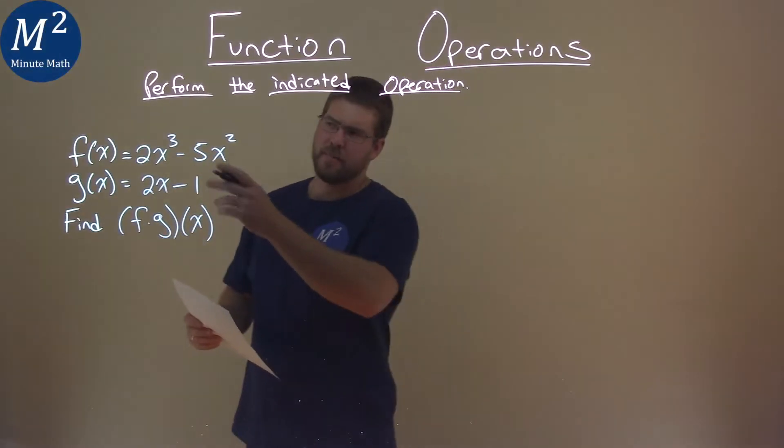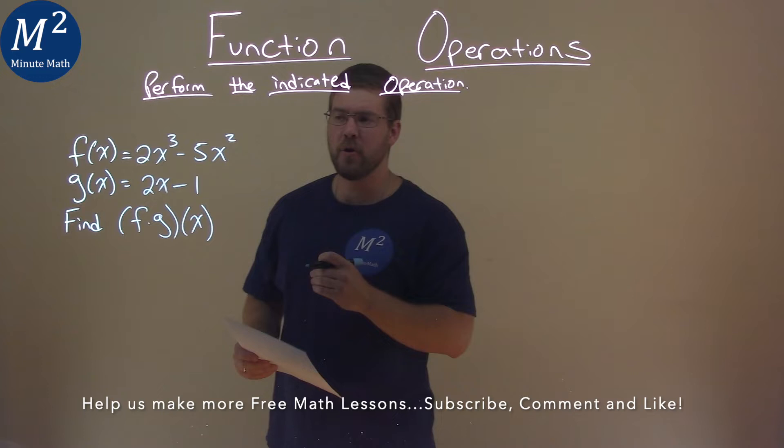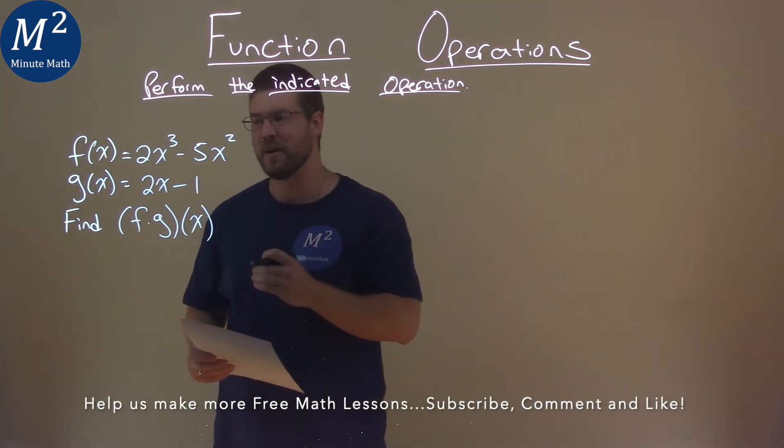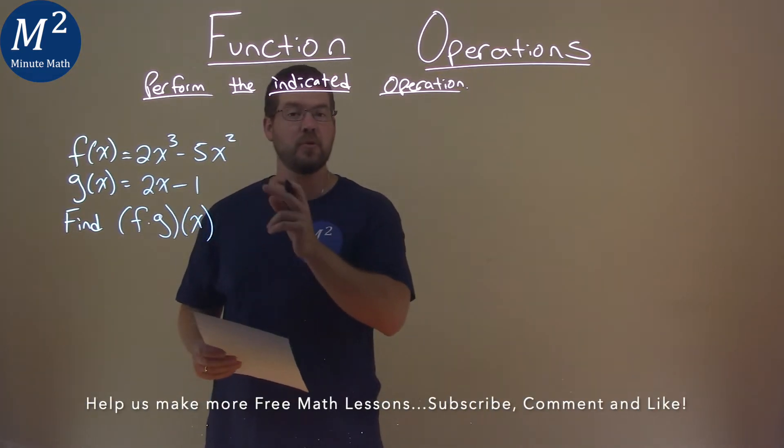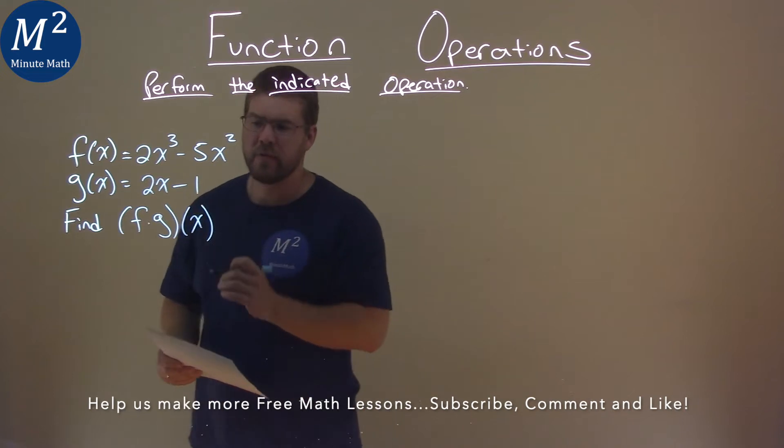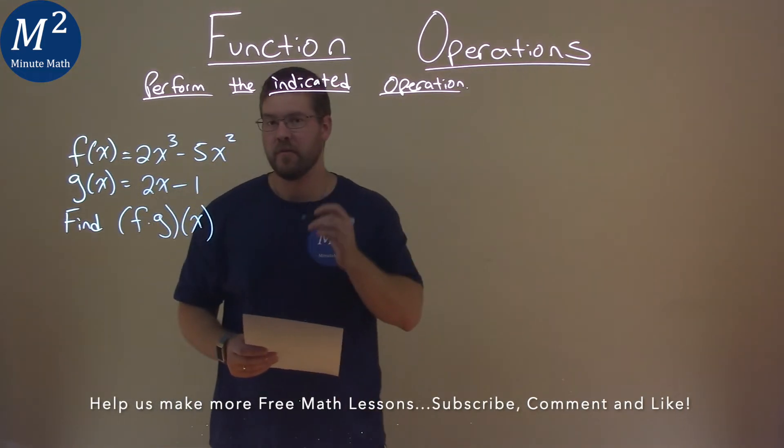We're given this problem right here. f of x equals 2x to the third power minus 5x squared. g of x is equal to 2x minus 1. And we need to find f times g of x.